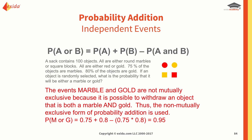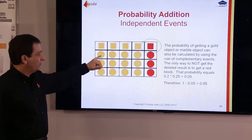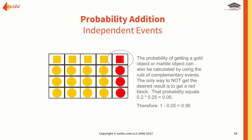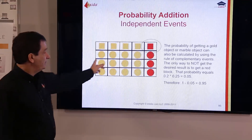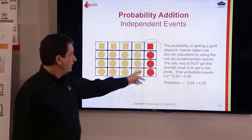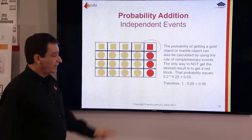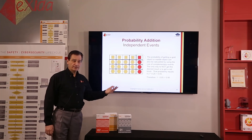If we didn't consider the independence and just assumed mutually exclusive, we would get the wrong answer — more than one — and we cannot get more than 100%. Another way is to use the complement rule: the only way of not getting a gold object or marble is to get a red block. Probability of not gold is 0.2, probability of not marble is 0.25; multiplying gives 0.05, and 1 minus 0.05 gives 0.95 — the same answer. The complement rule makes the math a lot simpler.